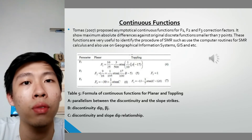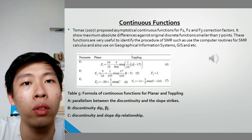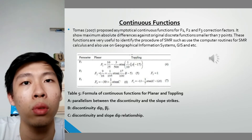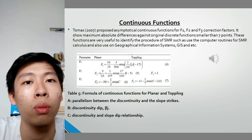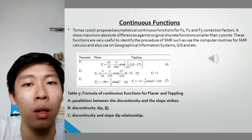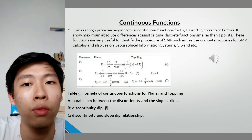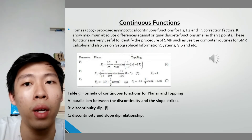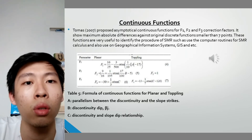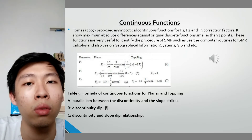Thomas proposed analytical continuous functions for F1, F2, and F3 correction factors, showing a maximum absolute difference against the original discrete function of smaller than seven points. These functions are very useful for SMR procedures, such as use in computer routines for SMR calculations and geographical information systems. Table 5 shows the formulas of F1, F2, and F3 continuous functions for planar and toppling failure modes, where variable A represents parallelism between the discontinuity and slope strike, B is the discontinuity dip, and C is the discontinuity and slope dip relationship.